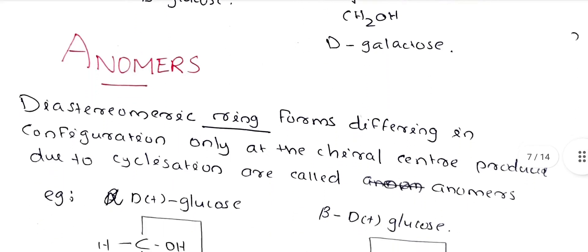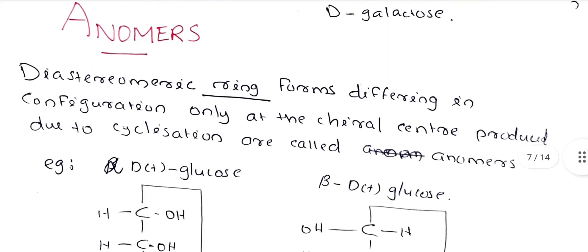What are anomers? Diastereomeric ring forms that differ in configuration only at the chiral center produced due to cyclization are called anomers. This new chiral center created during ring formation is called the anomeric carbon.